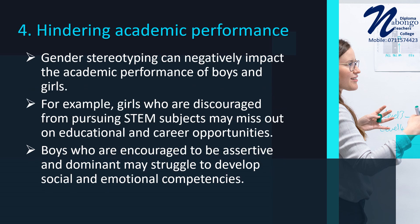Number 4 — Hindering Academic Performance: gender stereotyping can also negatively impact the academic performance of boys and girls. For example, girls who are discouraged from pursuing STEM subjects may miss out on educational and career opportunities, while boys who are encouraged to be assertive and dominant may struggle to develop social and emotional competencies. Addressing these issues requires promoting gender-neutral curricula and teaching practices, providing equal opportunities for boys and girls, and challenging harmful gender stereotypes in the classroom and wider society.